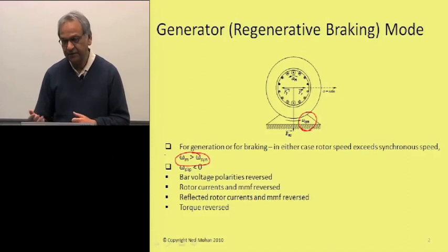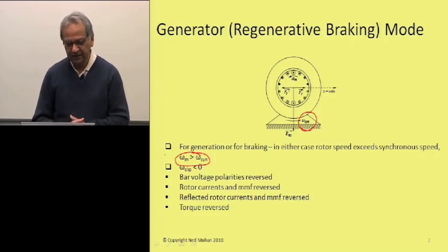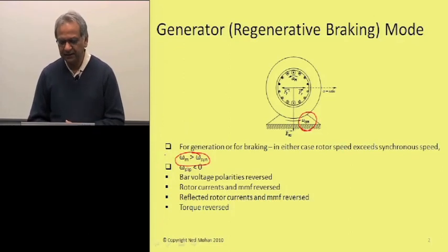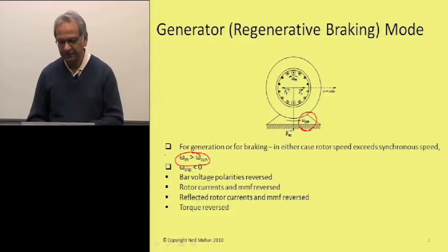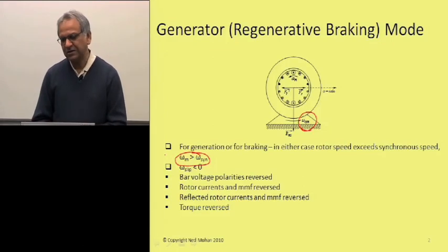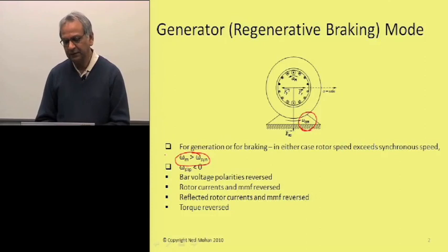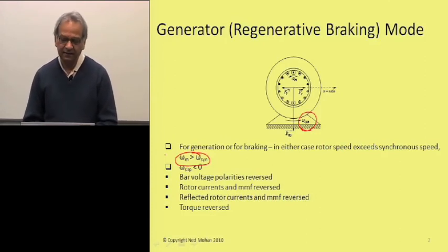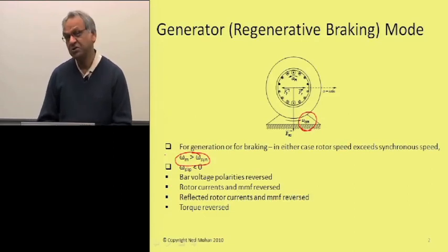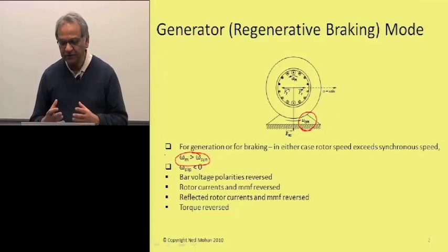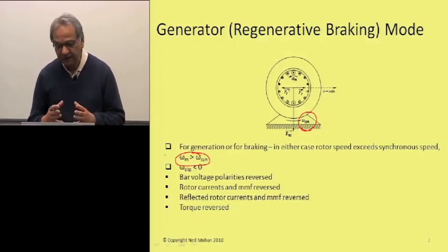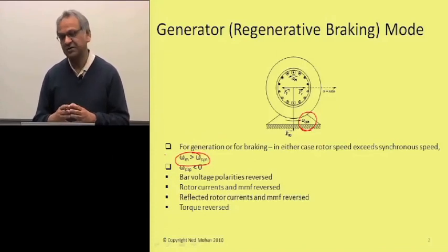In this case, omega slip, which we defined earlier as omega sync minus omega m, becomes negative. The bars which are under the maximum flux density at this instant of time would have the highest induced voltage and, if you neglect the leakage inductances in the rotor circuit, the highest current. But this time, the rotor bars are moving faster than the speed of the flux density distribution in the air gap. Therefore, the polarities of voltages induced in these rotor bars are opposite to what they were in the motoring case, and the currents are also in the opposite direction.